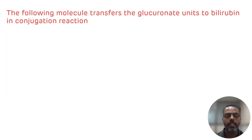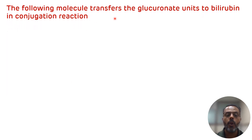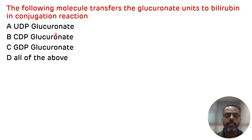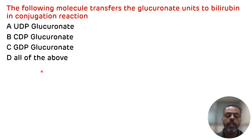The first question is: the following molecule transfers the glucuronate units to bilirubin in a conjugation reaction. The options are A. UDP glucuronate, B. CDP glucuronate, C. GDP glucuronate, and D. All of the above.